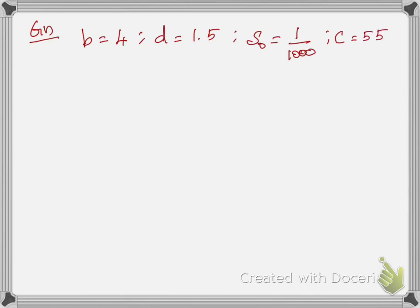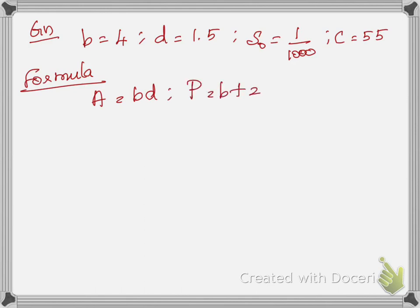The formulas we will be using for the rectangular channel are: Area A = b × d, wetted perimeter P = b + 2d, and to get the discharge we will use the formula Q = A × C × √(R × S₀), where R is the hydraulic radius.